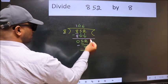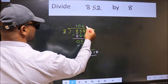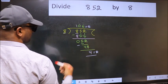No more numbers to bring it down, so we stop here. This is our remainder and this is our quotient.